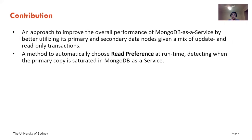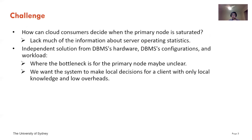The key thing to achieve this is to detect when the primary copy is saturated in MongoDB as a service. To achieve this goal, we face a couple of challenges. The first one is: how can cloud consumers decide when the primary node is saturated? Aiming at a cloud consumer means we lack much of the information about server operating statistics. Secondly, we would like our solution to be able to work out of the box — independent from database hardware, configurations, and workload. This essentially means where the bottleneck on the primary node is unclear.